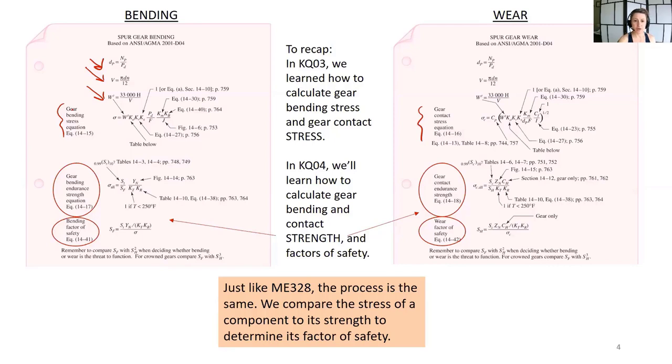And then what we're learning today is the other part of this analysis, so the gear bending endurance strength and the gear contact endurance strength. So this is a really handy figure to just drop into your analysis tool. Just like in ME 328, the process is the same. We'll compare the stress of a component to its strength to determine the factor of safety. It's just more difficult here because the strength, it's not as simple as looking up one number in the back of a textbook. We have to modify these strength values to represent our situation.